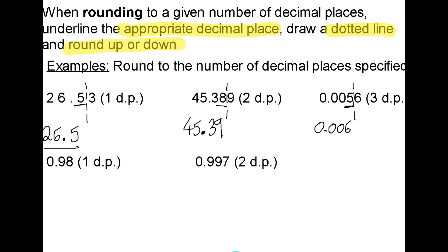In the next question, I want to round to one decimal place, so I underline the first number after the decimal point, which is 9. I draw a dotted line, and I have an 8 immediately after the dotted line, which tells me to round up. Now, if I have 9 tenths and I add on another tenth, that's going to give me one unit. So you might think the final answer would just be 1, but because we're rounding to one decimal place, we need to give our answer as 1.0, because that tells the person checking your answer that you have indeed rounded to one decimal place.